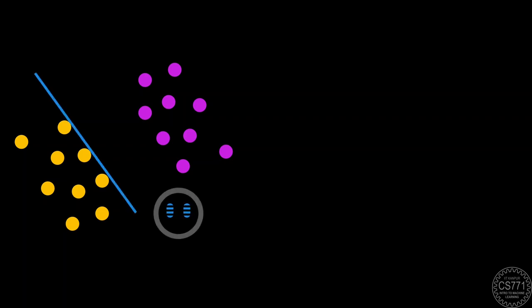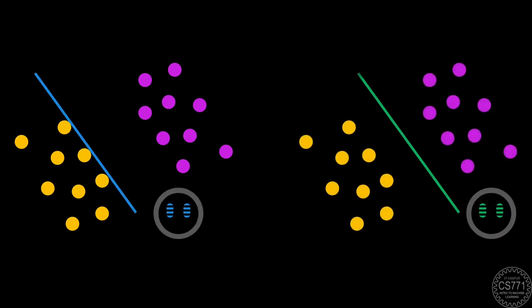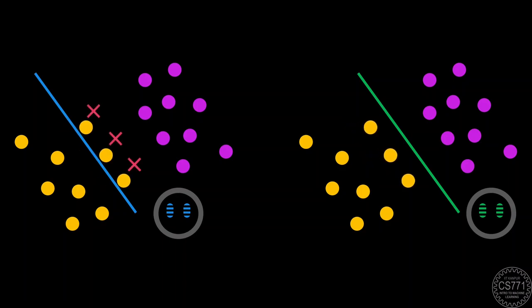In a previous discussion, we saw that classifiers whose decision boundaries pass very close to the data points are less confident about their predictions and can be quite brittle. This toy example from our previous discussion shows how Melbo's classifier starts giving wrong predictions if the points are shifted even a little bit, since Melbo's decision boundary passes very close to the data points. On the other hand, Melby's classifier is much more robust.